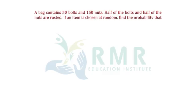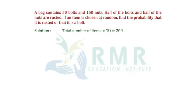A bag contains 50 bolts and 150 nuts. Half of the bolts and half of the nuts are rusted. If an item is chosen at random, find the probability that it is rusted or that it is a bolt.